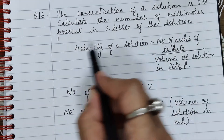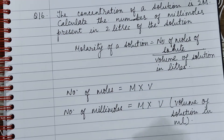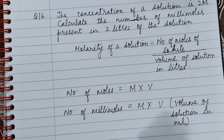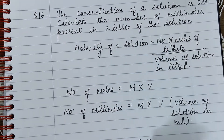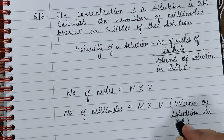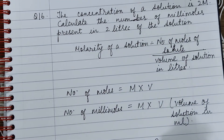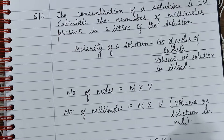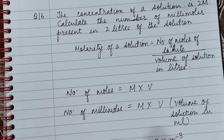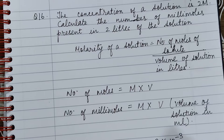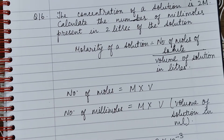In this question, molarity of solution is 2M and volume of solution is 2 liters. So number of millimoles will be 2 into volume of solution, which is 2 liters, but we have to convert liters into milliliters, so it will be multiplied by 10 to the power minus 3. So the answer is 4 into 10 to the power minus 3 millimoles.